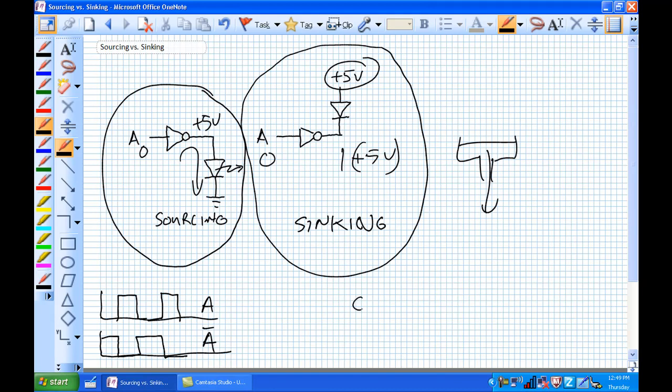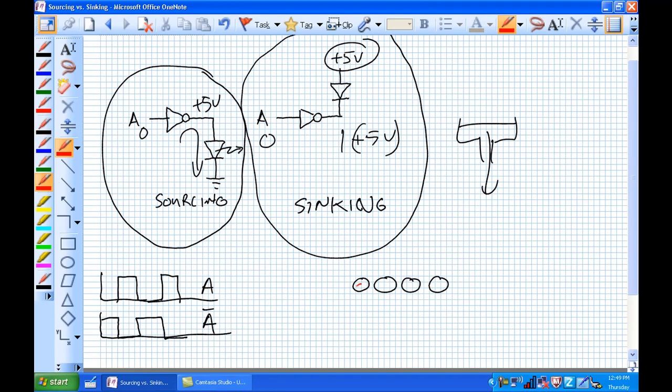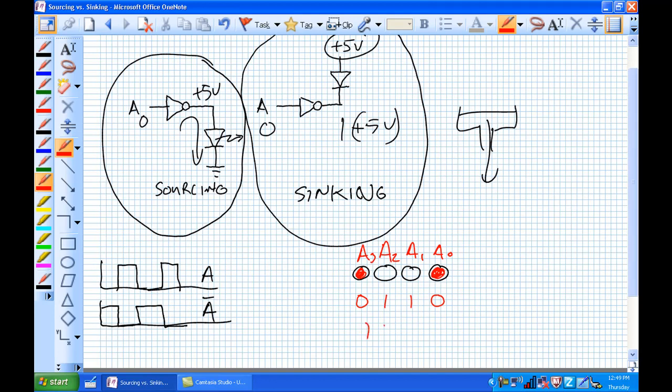So if I gave you 4 LEDs and let's say this guy is lit, this guy is lit and you are in a sourcing arrangement, what does that represent? Well, if you're taking signal A there, basically this would be A 0, 1, 1, 0 and what I'm doing is A3, A2, A1, A0. But if I was using a sinking arrangement, that would be 1, 0, 0, 1.